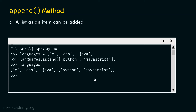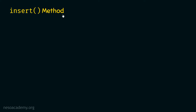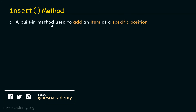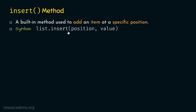Now let's move on to the insert method. Insert method is a built-in method used to add an item at a specific position. Unlike append, insert provides the flexibility to add an item at the beginning, middle, or any position in the list. The syntax is: list.insert(position, value), where we provide two arguments — the position index and the value to insert.